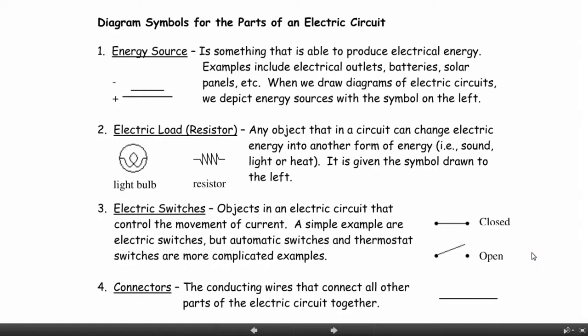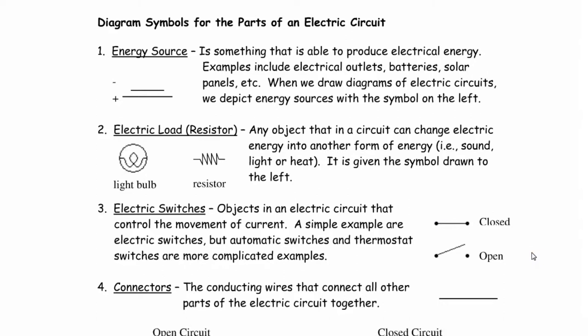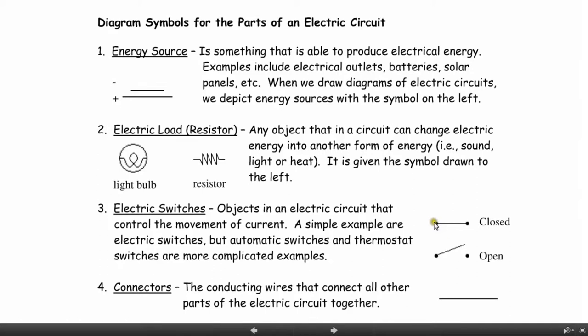Switches can open and close a circuit and allow electricity to pass through or stop the electric current from traveling through a closed circuit. Switches are drawn as shown. And lastly, connectors are conducting wires that connect all of the different components together. And they are just drawn as straight linear lines.